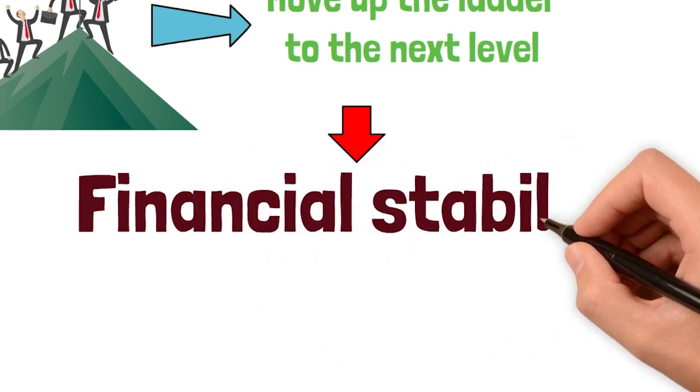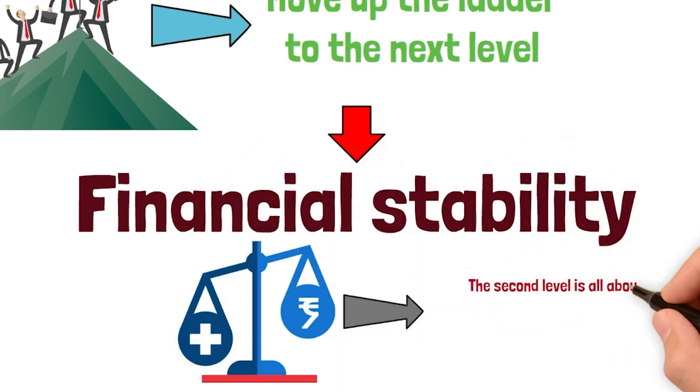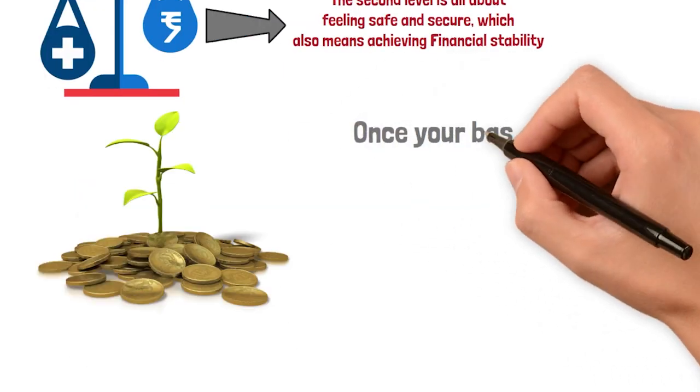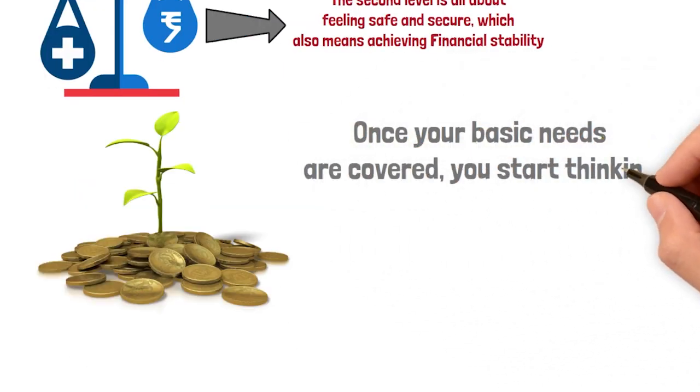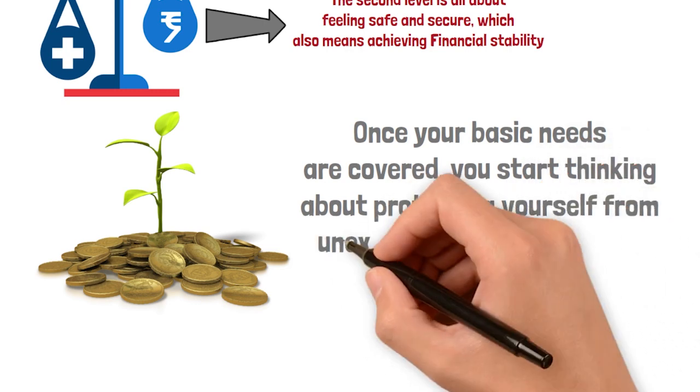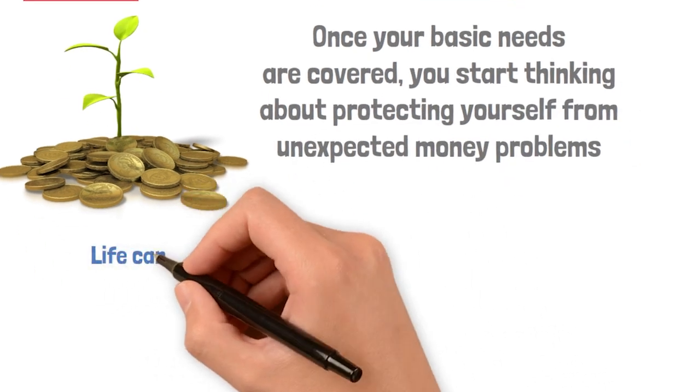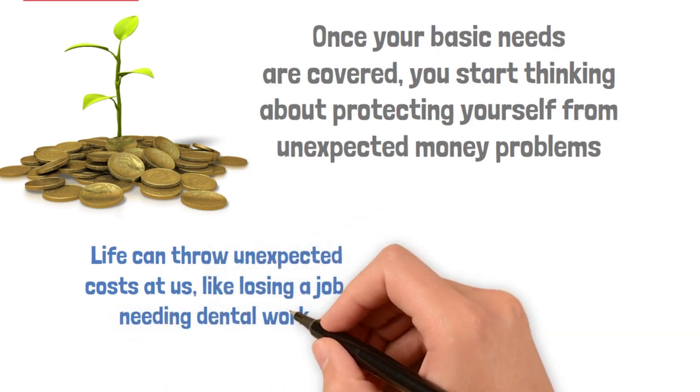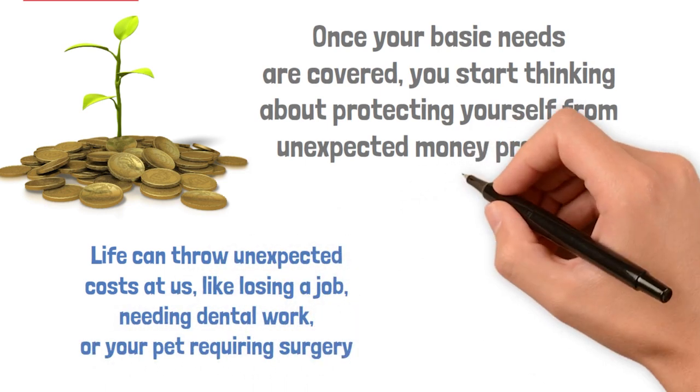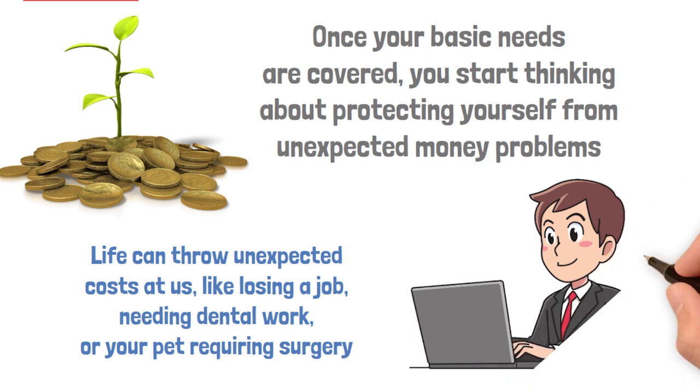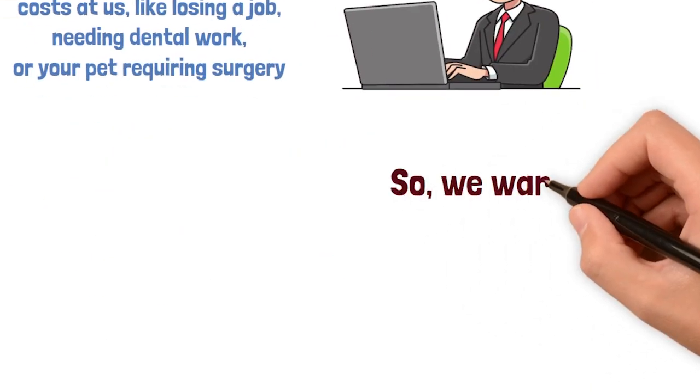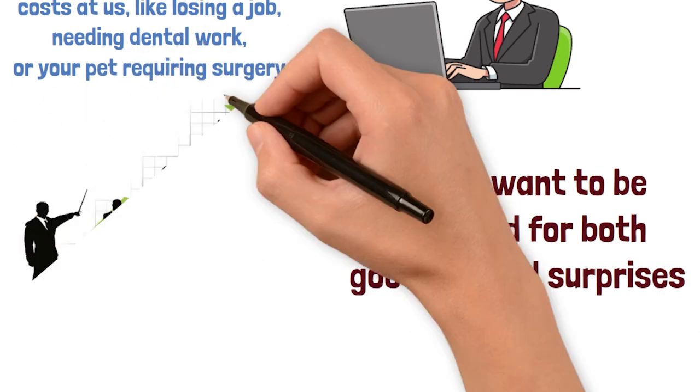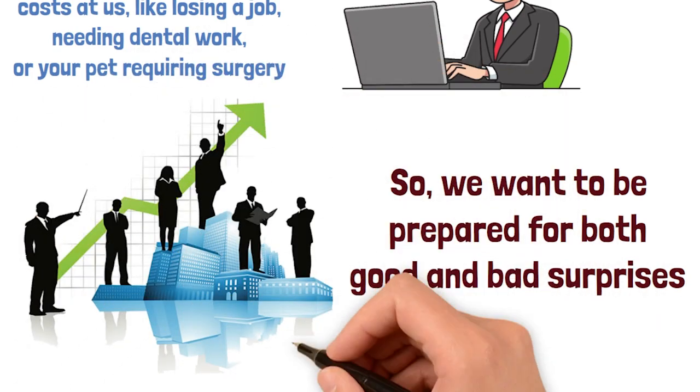Financial stability. The second level is all about feeling safe and secure, which also means achieving financial stability. Once your basic needs are covered, you start thinking about protecting yourself from unexpected money problems. Life can throw unexpected costs at us, like losing a job, needing dental work, or your pet requiring surgery. But sometimes good opportunities also come along that need money. So we want to be prepared for both good and bad surprises. To avoid slipping back into financial survival mode, we need to save.